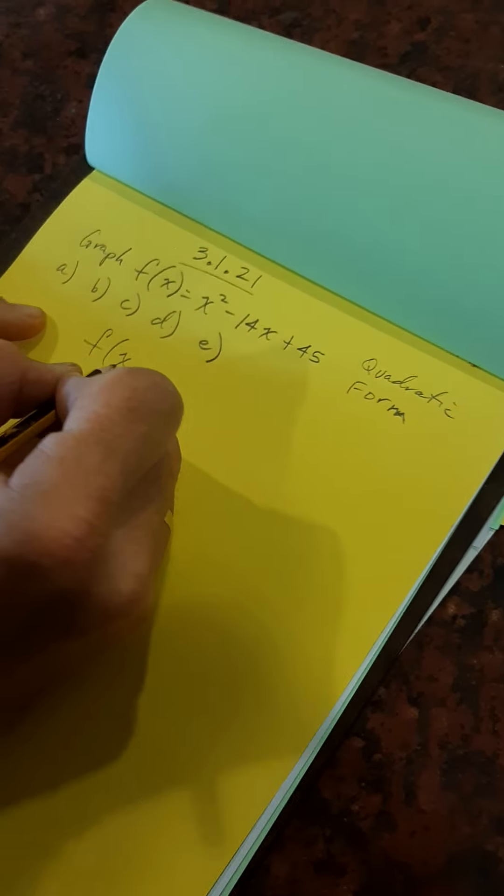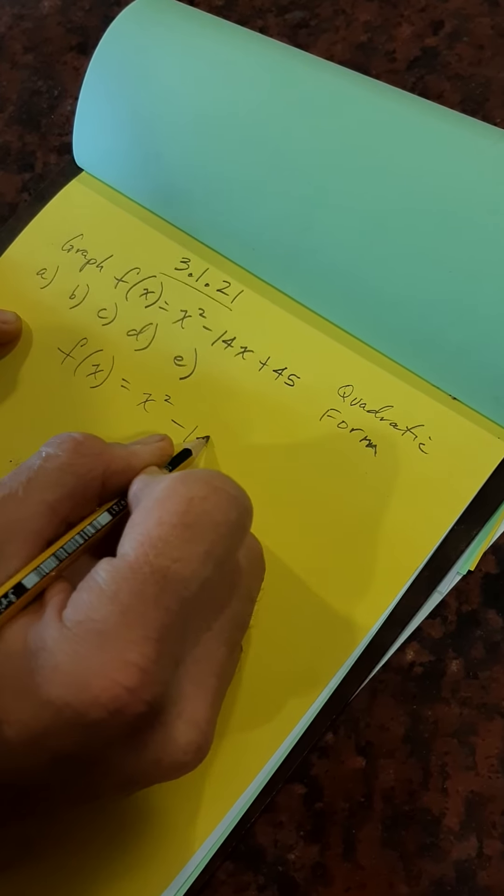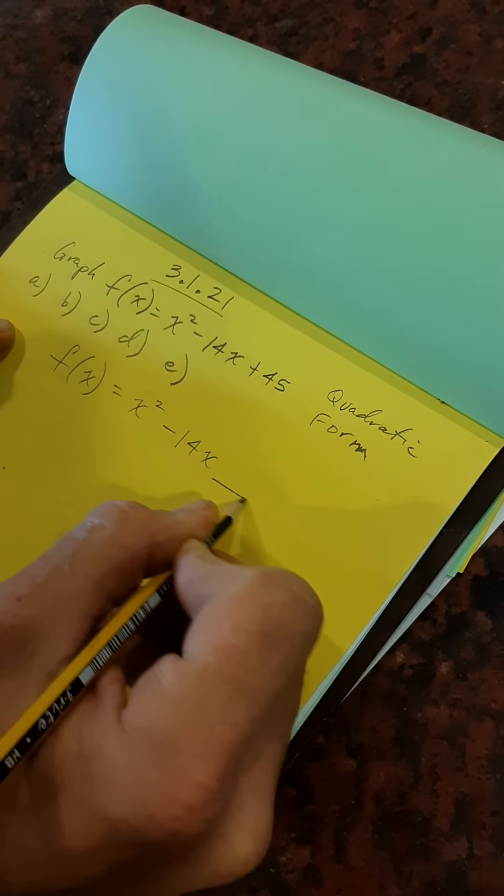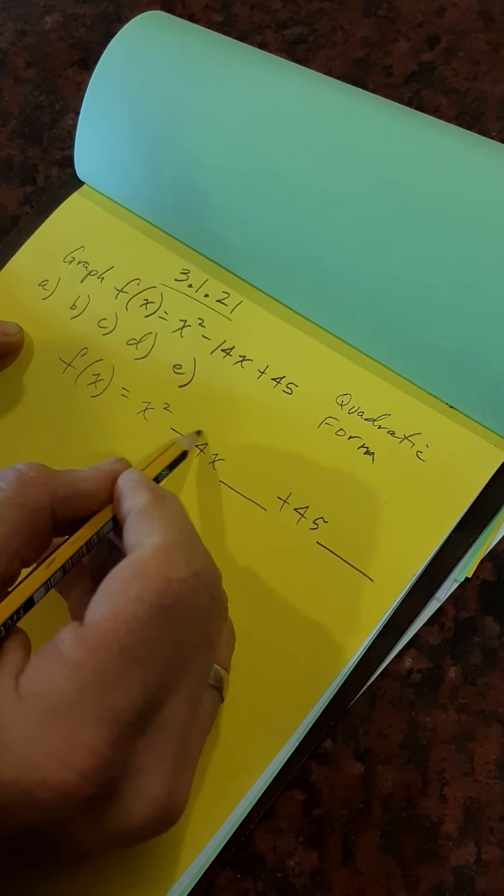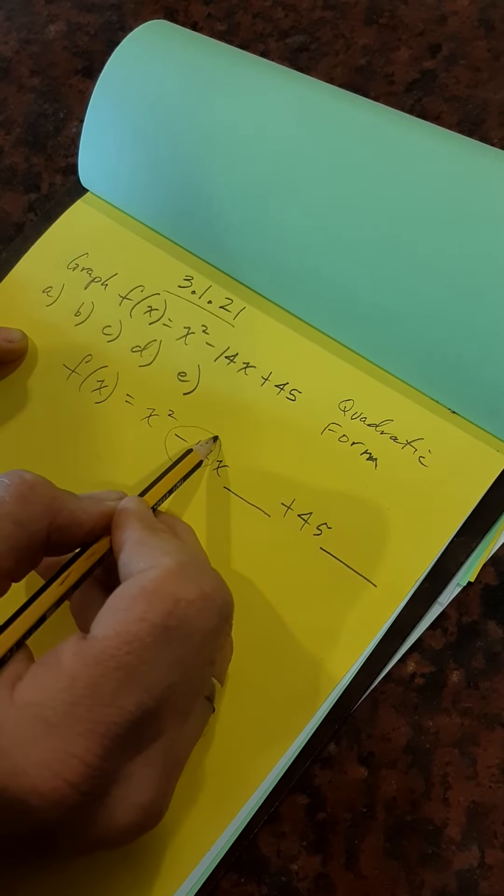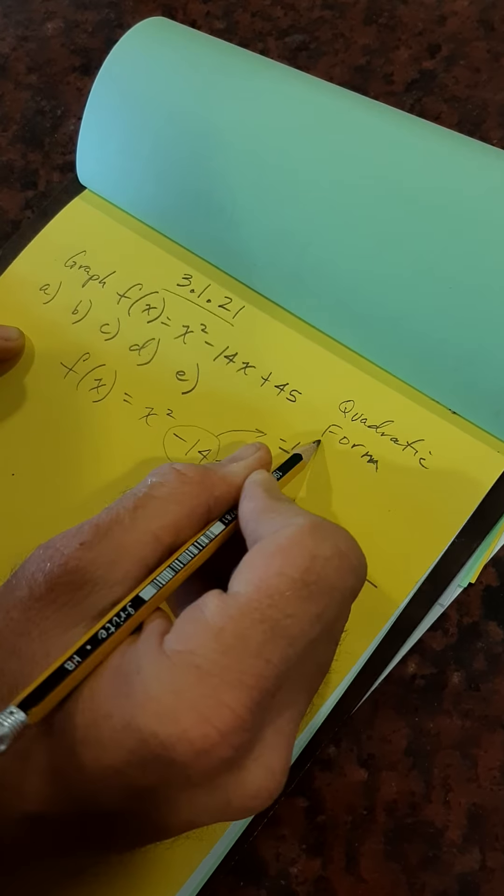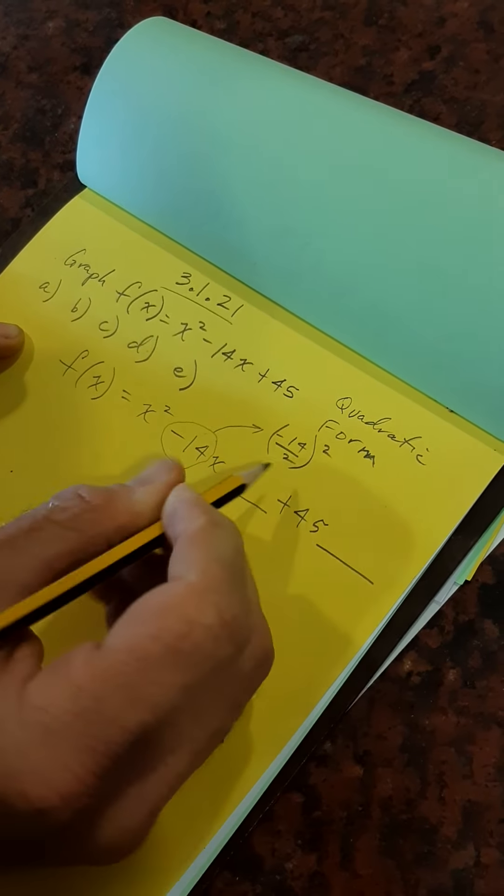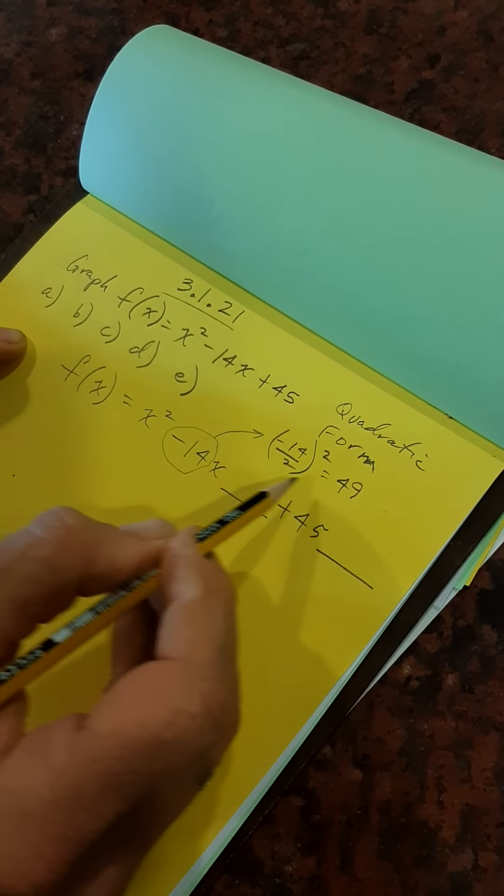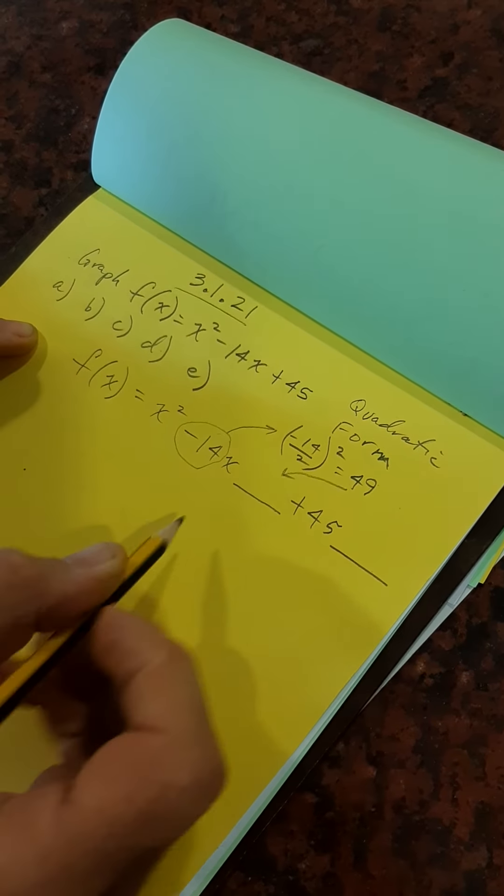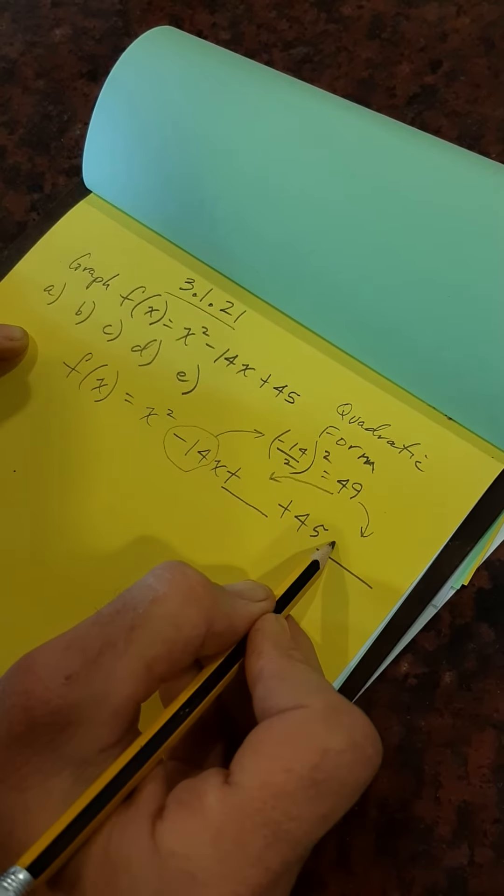So we've got f of x equals x squared minus 14x and then a blank, and then the plus 45 and another blank. And I take this minus 14, doing my little magic trick here. Minus 14 divided by 2 squared. Minus 7 squared, 49.